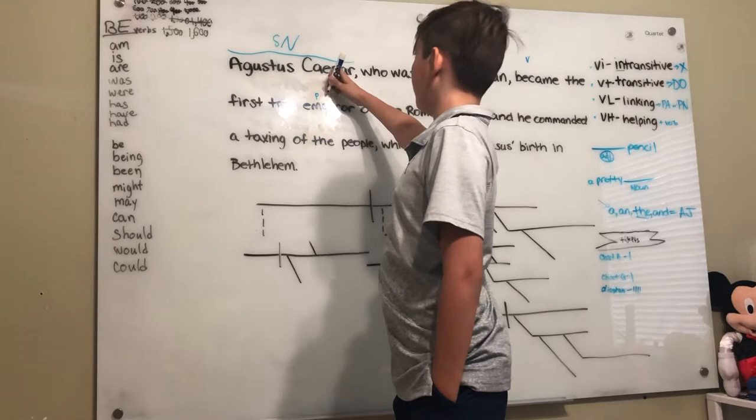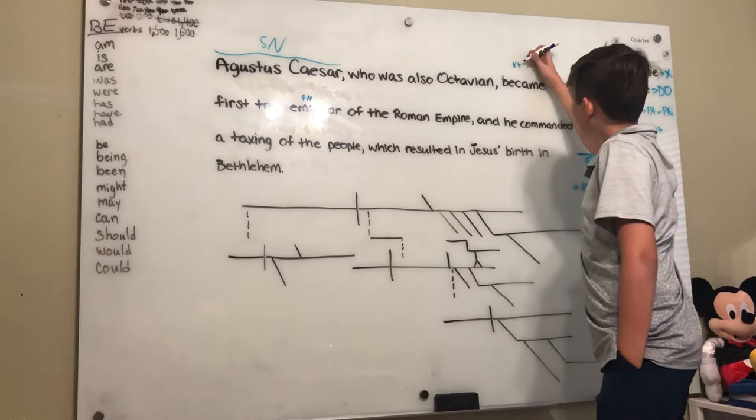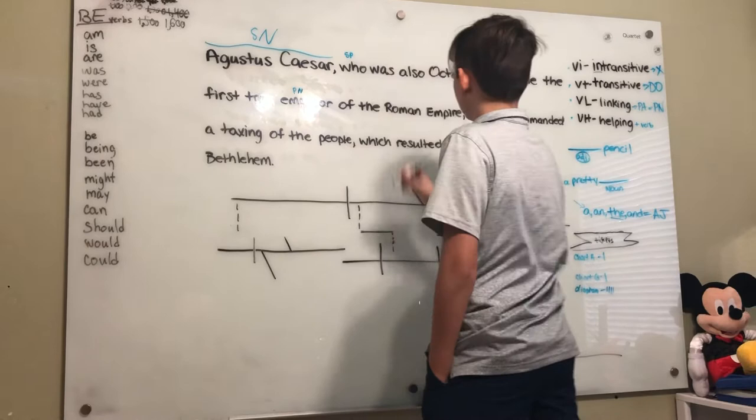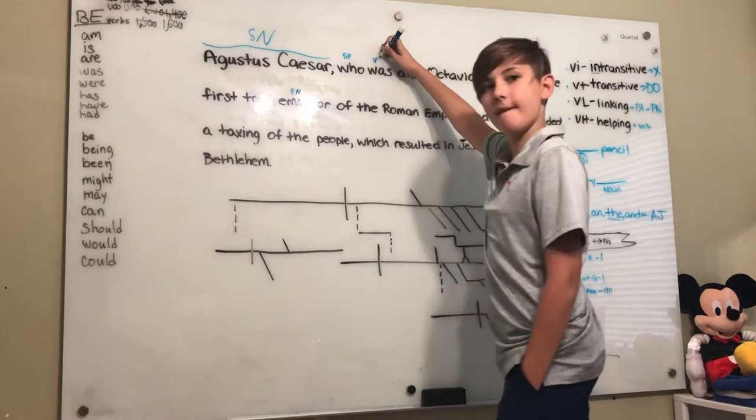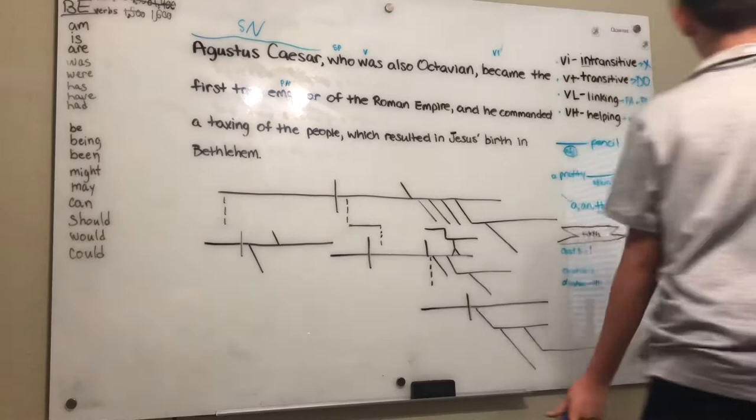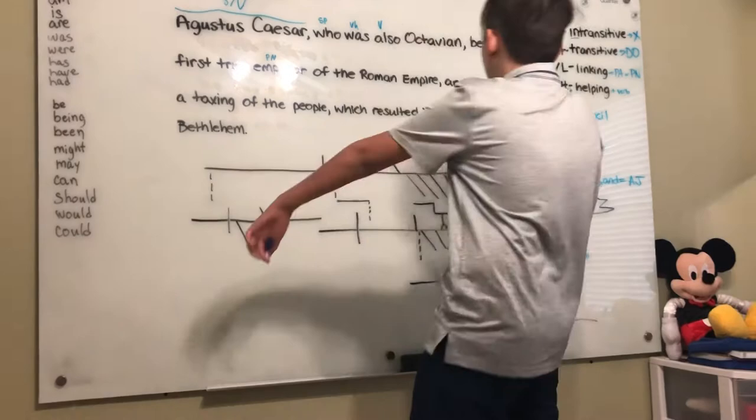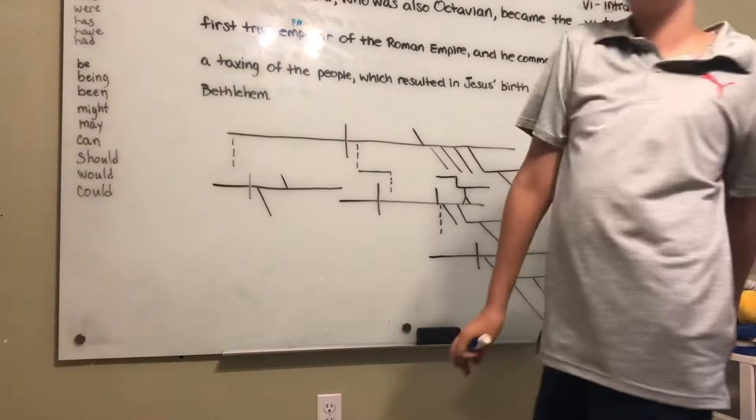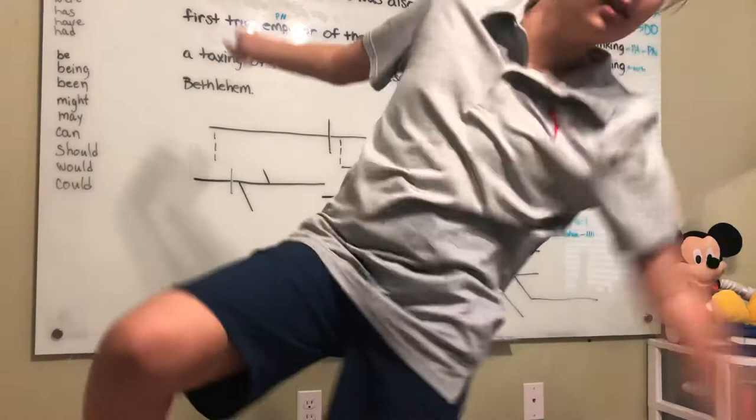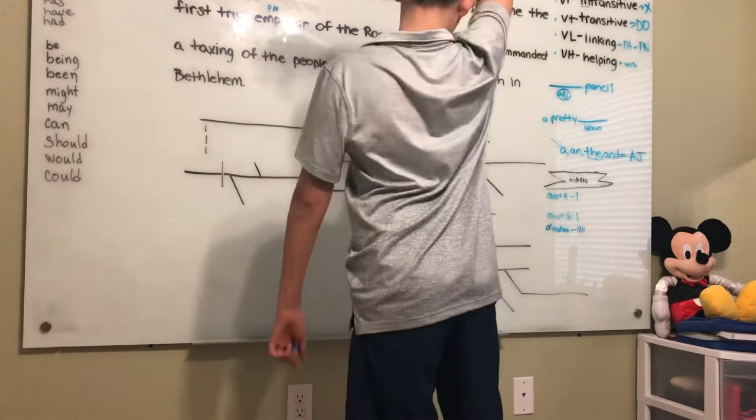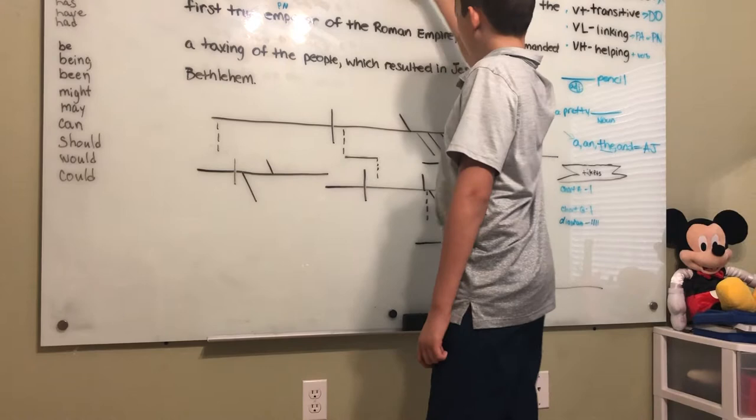That's right. We're blanking, and also, subject pronoun. That's a verb helping, right? What is it helping? It's helping also. Who was also. Also is an adverb. Was is your verb. But also is an adverb. So, Octavian is a predicate nominative. And this is linking verb.